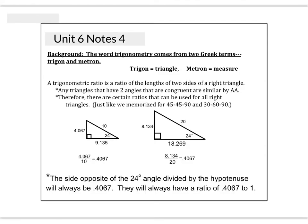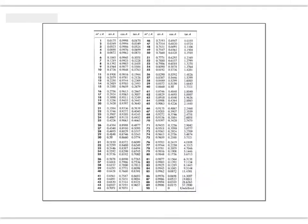Let's start the notes for Unit 6, Lesson 4. We're going to start something called trigonometry — the study of triangle measures. Specifically today, we'll study right triangles and the ratios between their sides. About 2,000 years ago, there was a group of monks who were mathematicians and philosophers. They discovered that all right triangles with a given angle, like 90 and 24 degrees, were similar to each other, and that the short leg divided by the hypotenuse always gave 0.4067. They made a chart of these ratios so that the average person wouldn't have to memorize them.